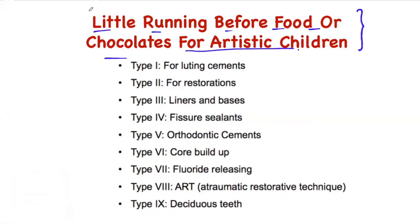If we look at this line: type 1 luting cement, type 2 for restoration, type 2 for bases, type 3 for fissure sealants, type 3 for orthodontic cement, type 4 core buildup, type 4 fluoride releasing, type 4 ART technique and deciduous teeth, or the teeth of children.